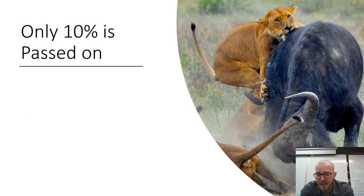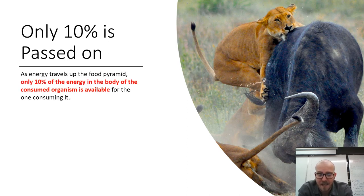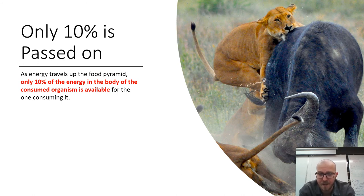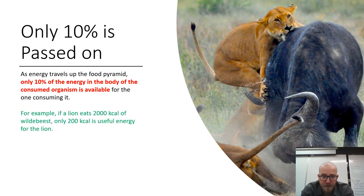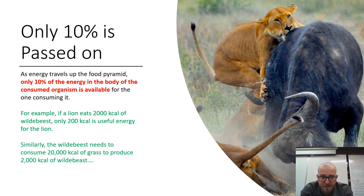Only 10% of that energy is passed on to the next level, and this is referred to as the 10% rule. As energy travels up the food pyramid, only 10% of the energy in the body of the consumed organism is available for what is eating it. So if a lion eats 2,000 kilocalories of wildebeest, only 200 of those kilocalories are useful for the lion. And the wildebeest needs to consume 20,000 kilocalories of grass to produce 2,000 kilocalories.